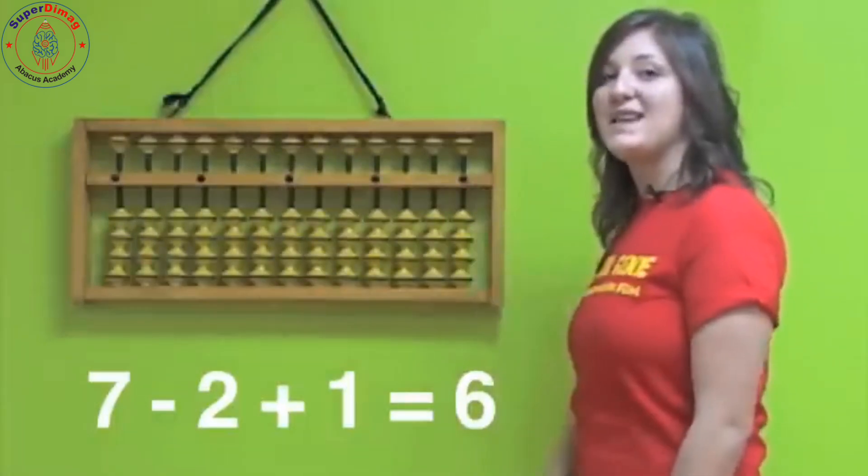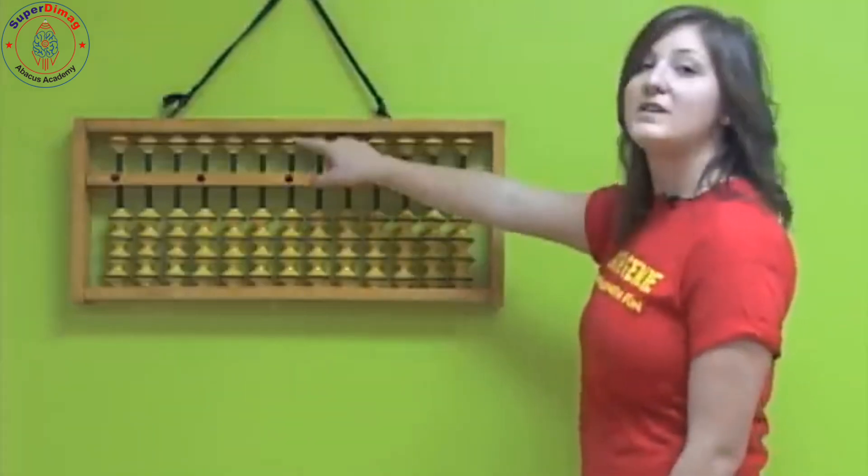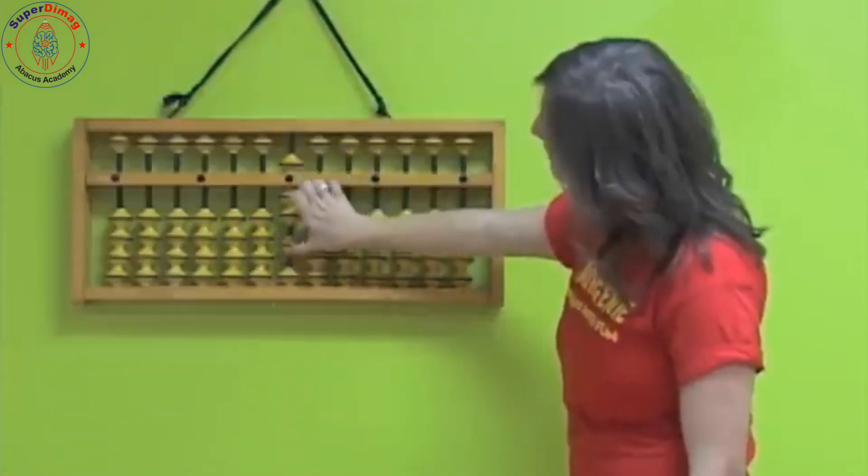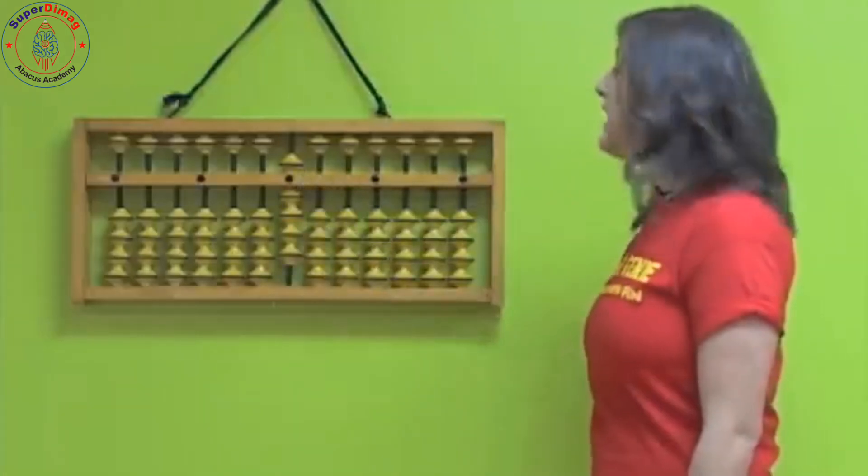We're going to clear our abacus and the last one we're going to do is a little bit tricky so don't get stuck. We're going to try with nine in the beginning. Five, six, seven, eight, nine. We're going to take away six.